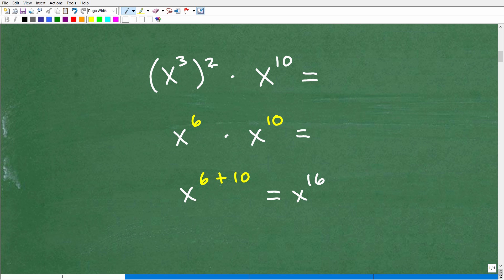So we have x cubed to the second power. Again, we're going to multiply the outside exponent to the inside exponent. So that'll be two times three. That's x to the sixth times x to the tenth. And I'm looking at the bases. Oh, the bases are the same. Exactly the same. x and x. It's multiplication. So I simply add the exponents. That's x to the sixth plus ten, which of course will be x to the sixteenth.